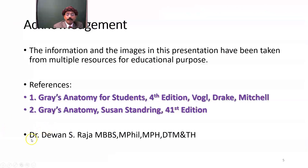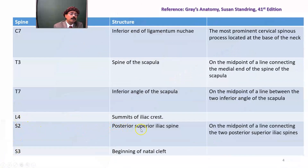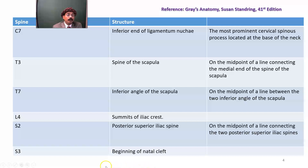S2 is the level of the posterior superior iliac spine. On the midline of a line connecting the two posterior superior iliac spines, we get vertebral S2. At S3, we have the beginning of the natal cleft. The posterior part of the sacral canal is deficient there, and the natal cleft site is sometimes used for epidural anesthesia during delivery of a baby — local anesthesia is given around the natal cleft passing through that region.